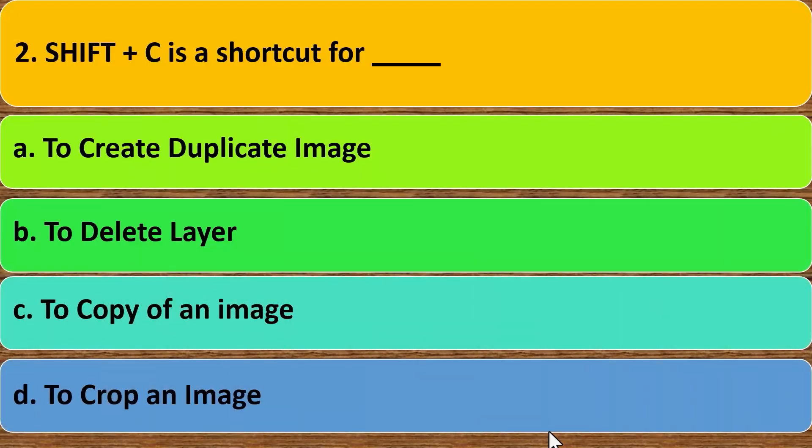Second, Shift plus C is a shortcut for dash. A. To create duplicate image. B. To delete layer. C. To copy of an image. D. To crop an image. Correct answer is D. To crop an image.